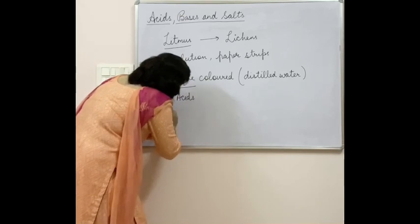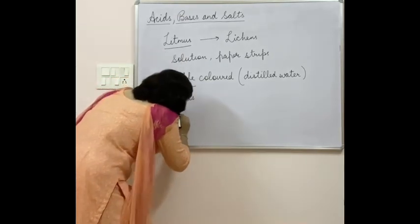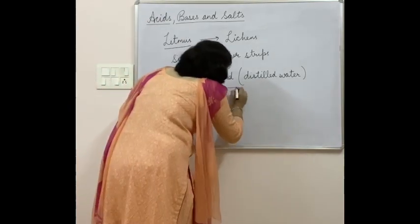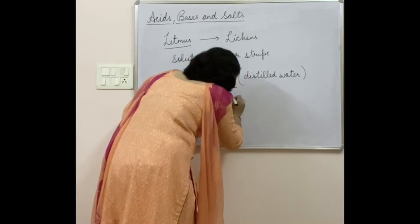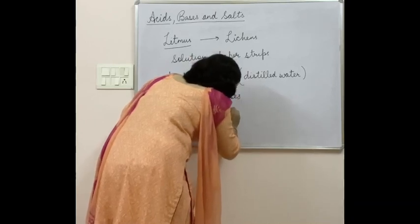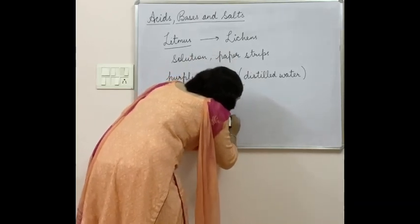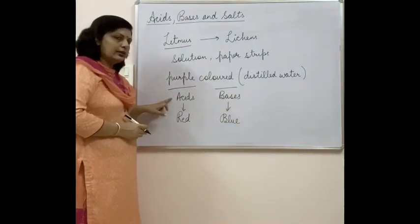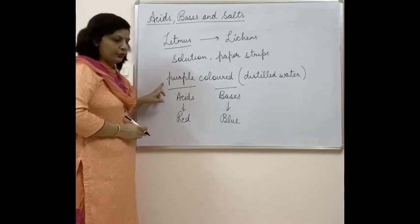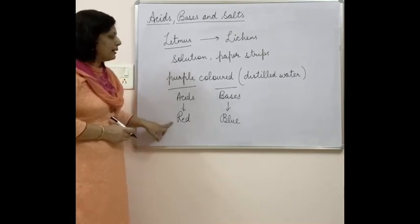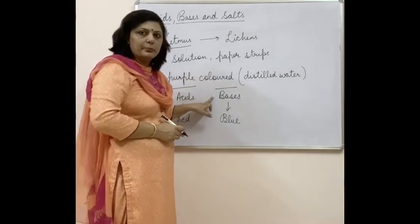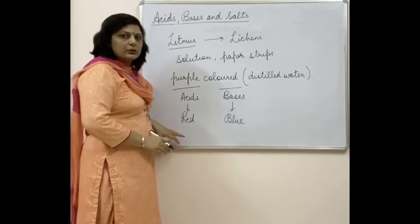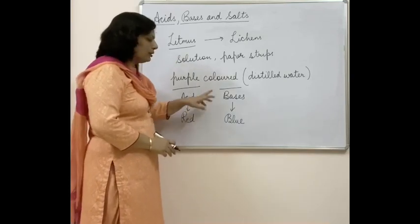If we add this purple colored litmus solution into an acid, the color will change to red. And if we use this purple colored solution in a base, the color will change to blue. So acids turn the purple colored litmus solution red, and bases turn it blue. This is how we use litmus solution to check whether a substance is an acid or a base.